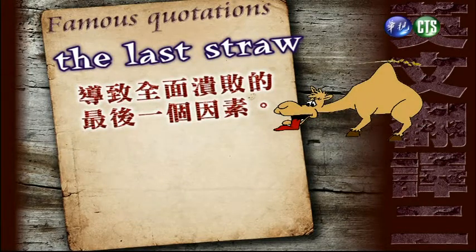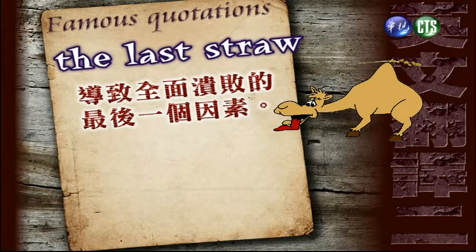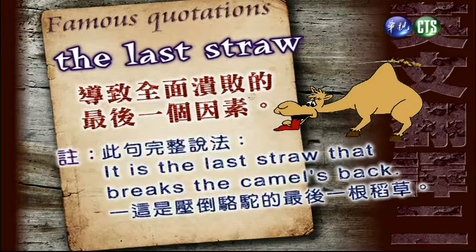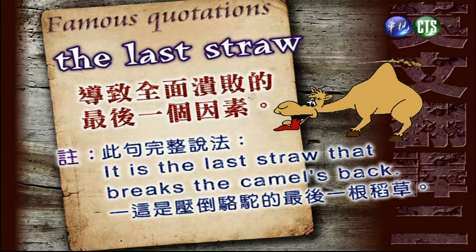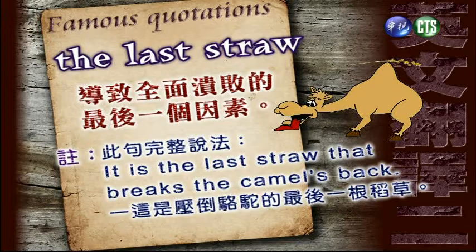The last straw. 导致全面溃败的最后一个因素，我们来做个注释。这句完整说法是 It is the last straw that breaks the camel's back，这是压倒骆驼的最后一根稻草。